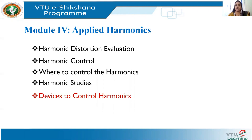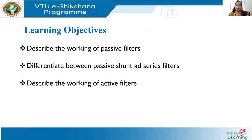In the last lecture we had started the topic on devices to control harmonics. We have seen two devices: one is inline chokes, which is just a reactor connected to the input of an adjustable speed drive, and the next device was a zigzag transformer, which is basically called a grounding transformer. Today we are going to see the topic of passive filters — what are the types of passive filters and what are the advantages and disadvantages of passive filters.